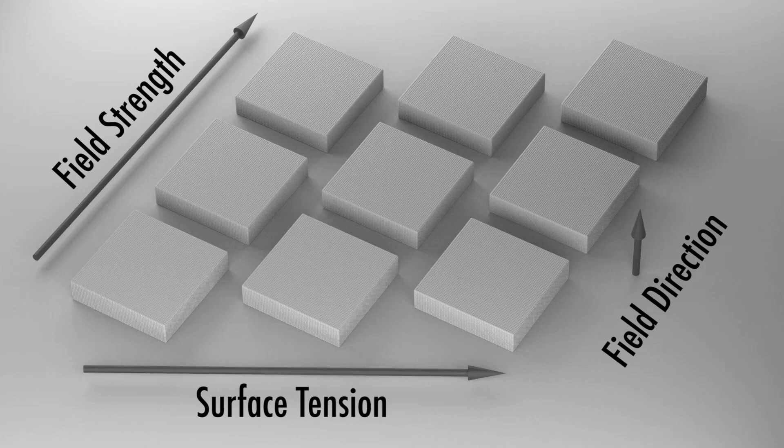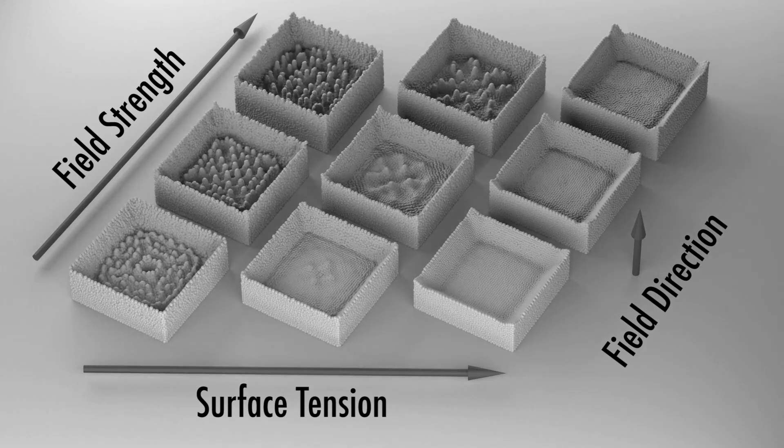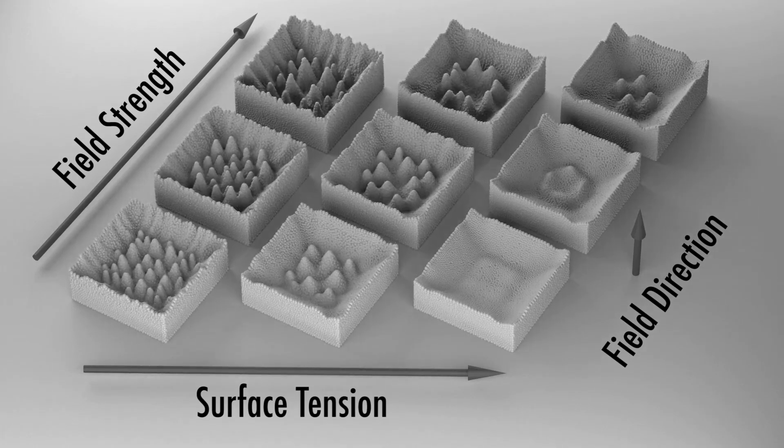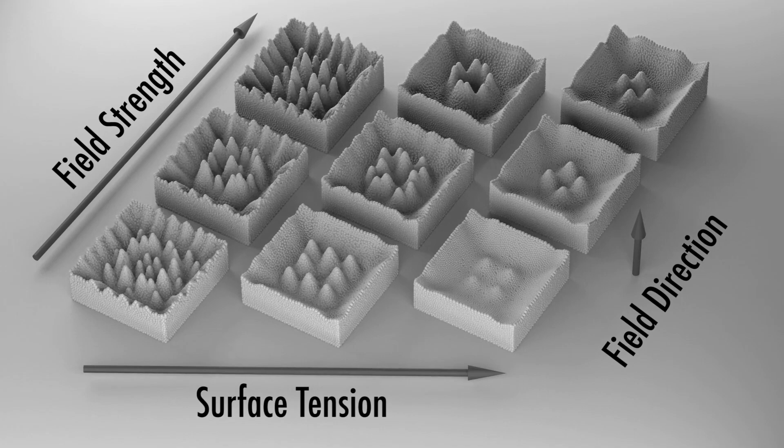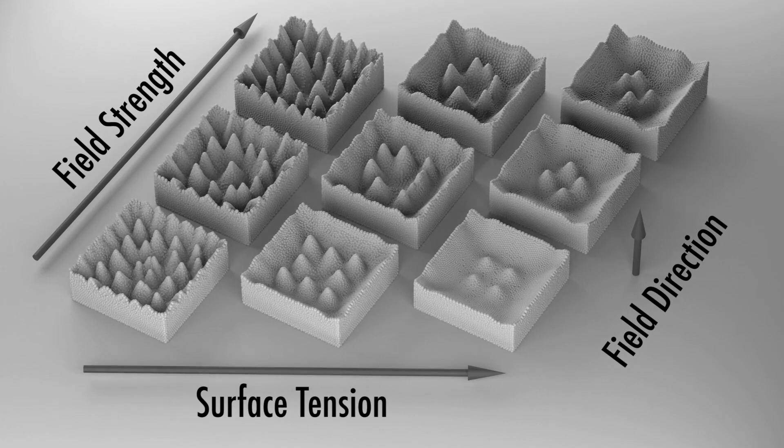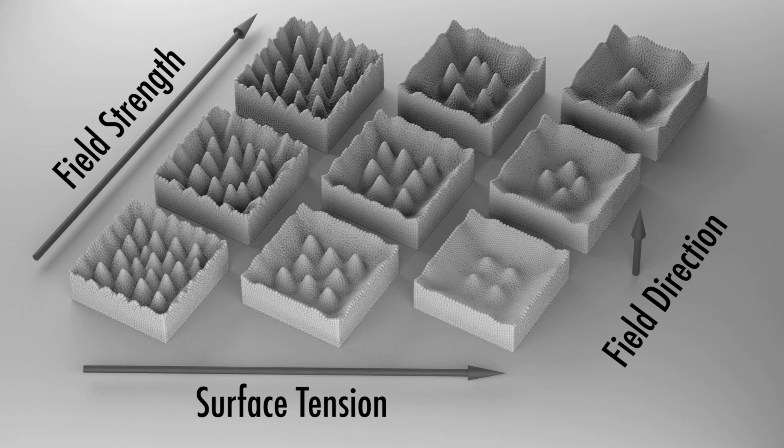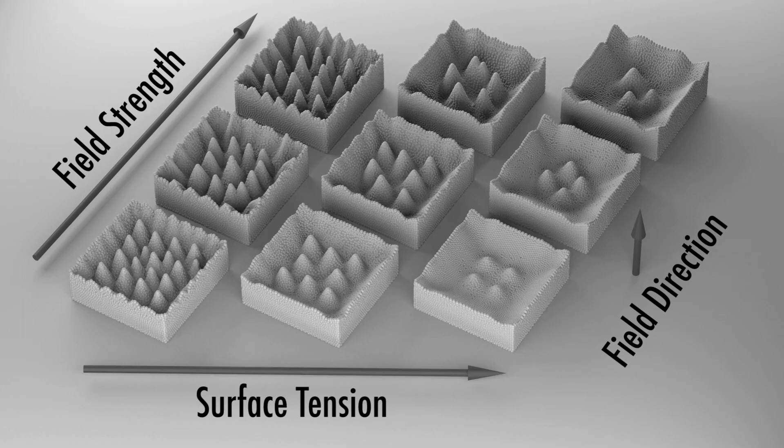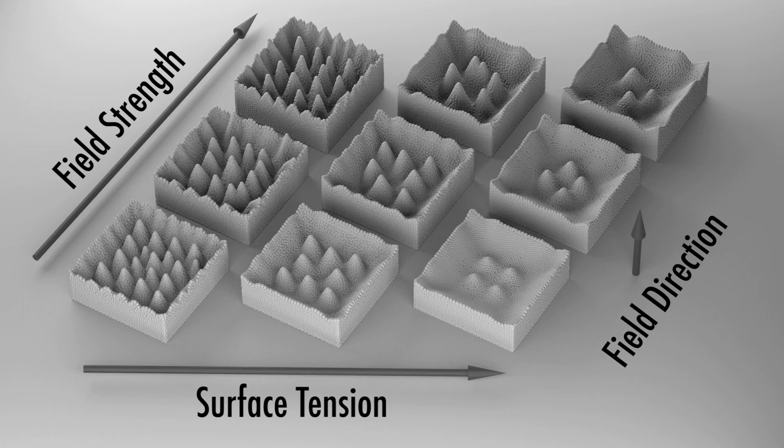If a magnetic field is applied, the ferrofluid starts forming its characteristic spikes. This is illustrated here for different surface tension and magnetic field strengths using a vertical constant magnetic field. A strong surface tension force smooths the contour, while a strong field strength increases the height of the spikes.